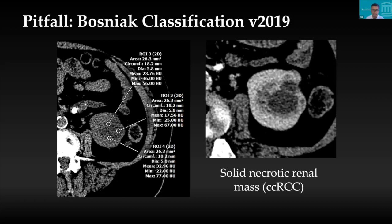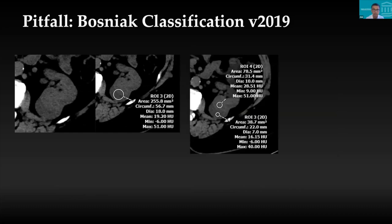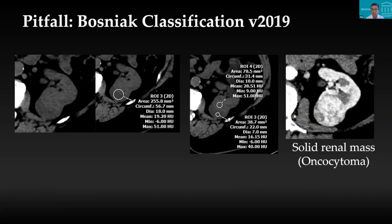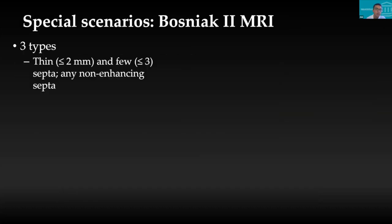An aggressive clear cell RCC can appear as a low-attenuation solid necrotic mass on unenhanced CT. Similarly, another case appeared heterogeneous — placing one big ROI gave 19 HU, but smaller ROIs showed 28 and 16 HU, indicating a heterogeneous solid mass that turned out to be an oncocytoma. Be wary of heterogeneous masses on unenhanced CT. On MRI, special cases include homogeneous markedly T2 hyperintense lesions or markedly T1 hyperintense lesions on non-contrast MRI, which can still be classified as type II cysts.